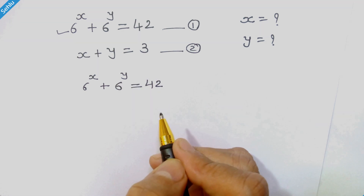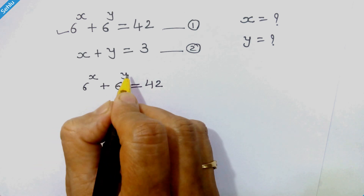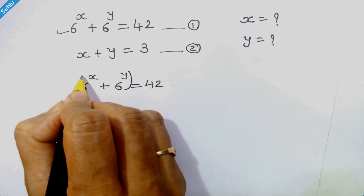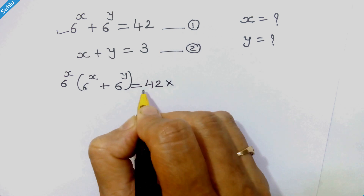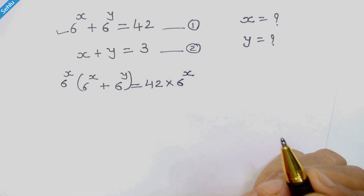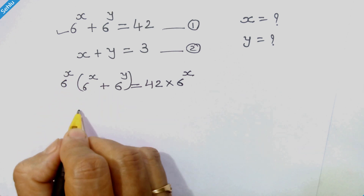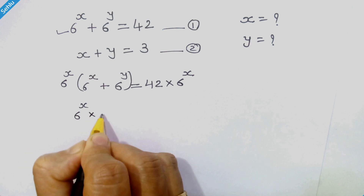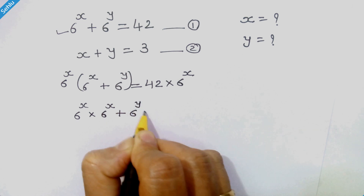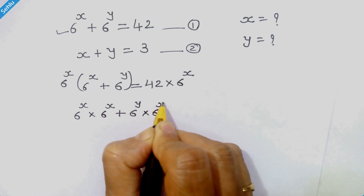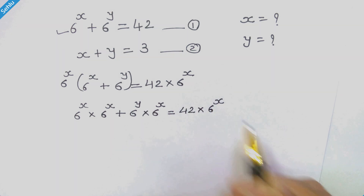Now what we are going to do is multiply both sides by 6 raised to x. So here we have 6 raised to x on the left, and 42 times 6 raised to x on the right. We distribute 6 raised to x into the bracket, giving us 6 raised to x times 6 raised to x, plus 6 raised to y times 6 raised to x, equal to 42 times 6 raised to x.